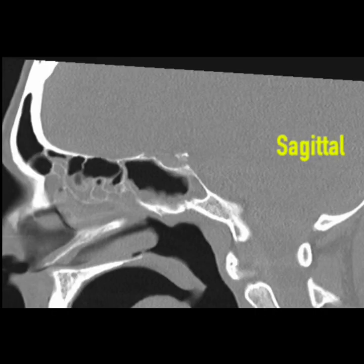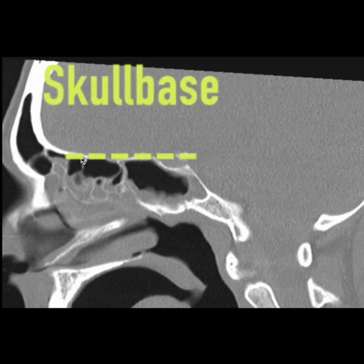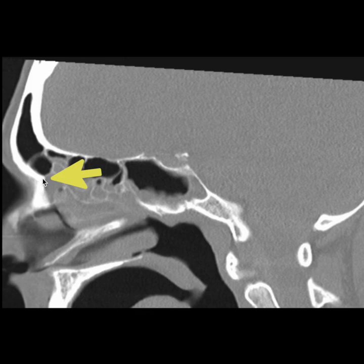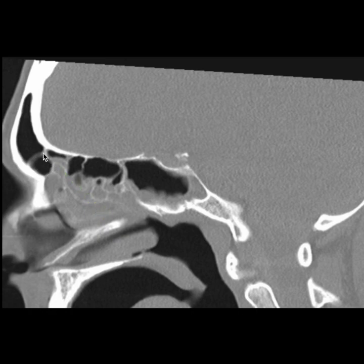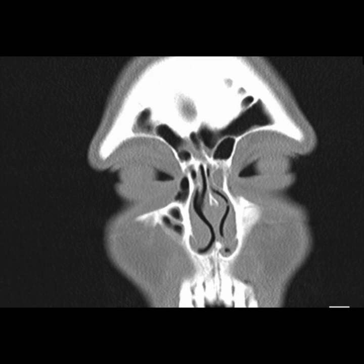This is the sagittal section, which is actually very important when we are doing frontal and sphenoid surgeries. This is the skull base, this is the frontal beak, and lower to that will be your agger nasi cell. The frontal recess will be over here, and can you see this cell? It is the same cell we saw before — and this is a large type 3 Kuhn's cell.